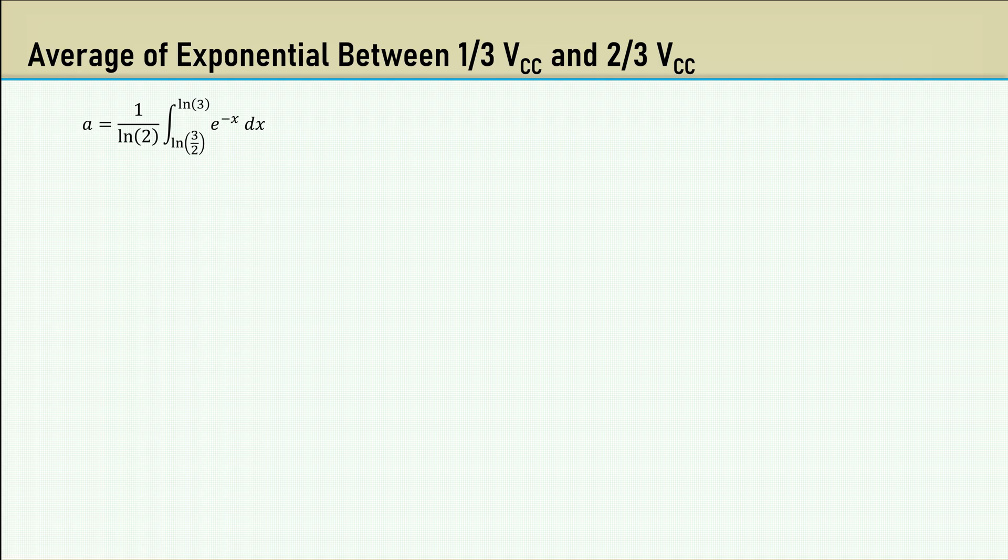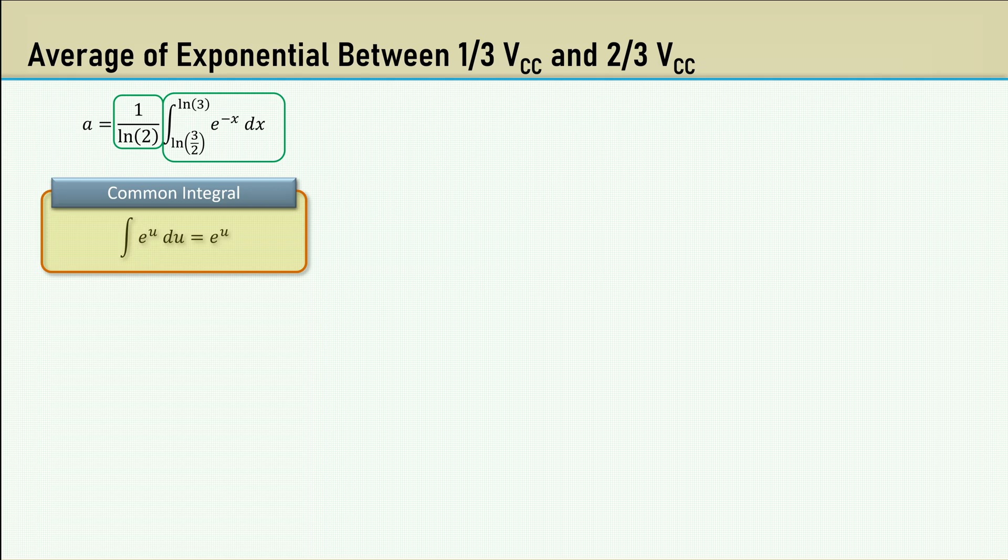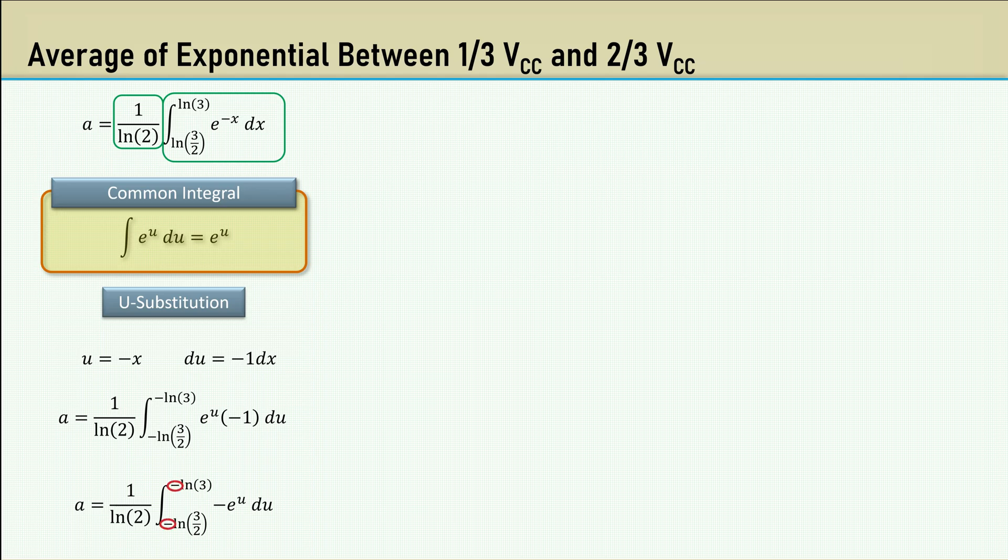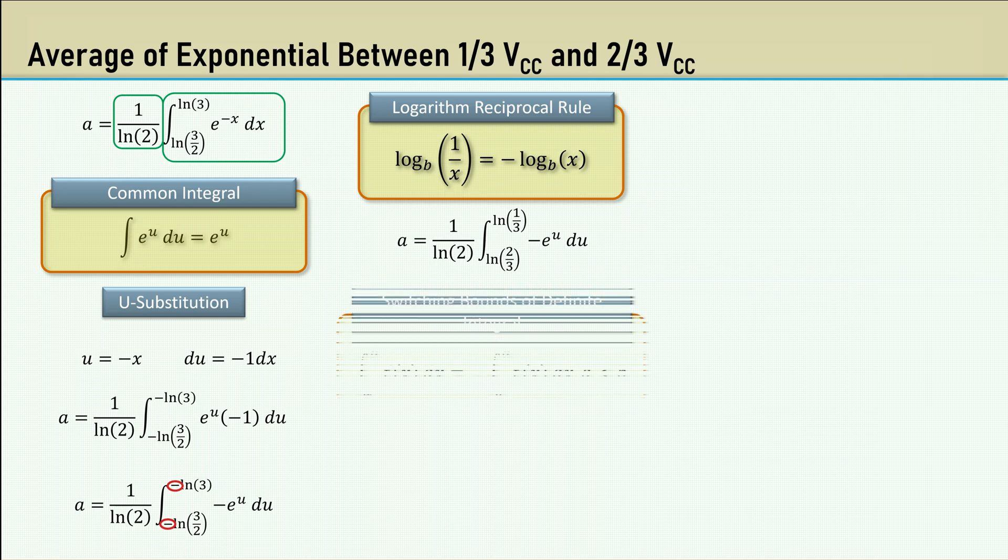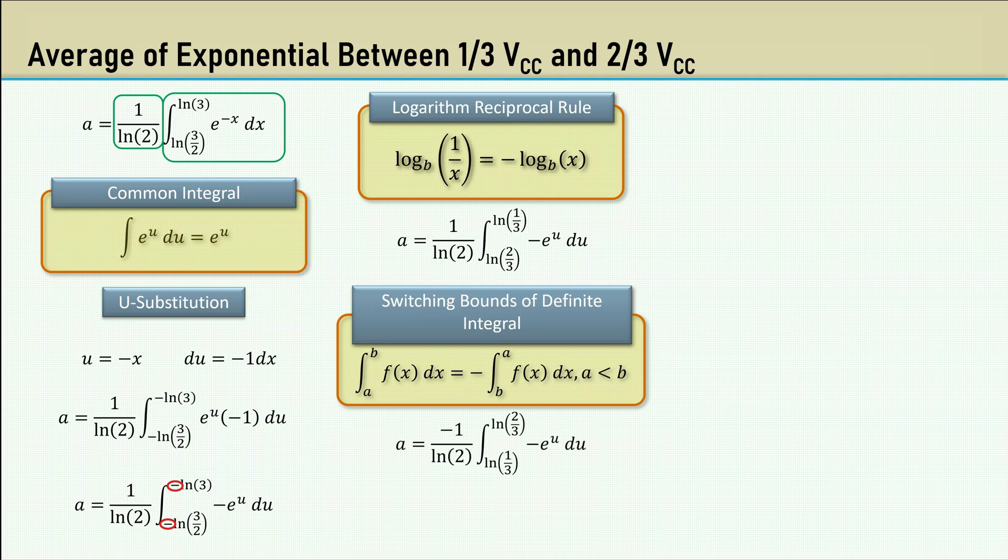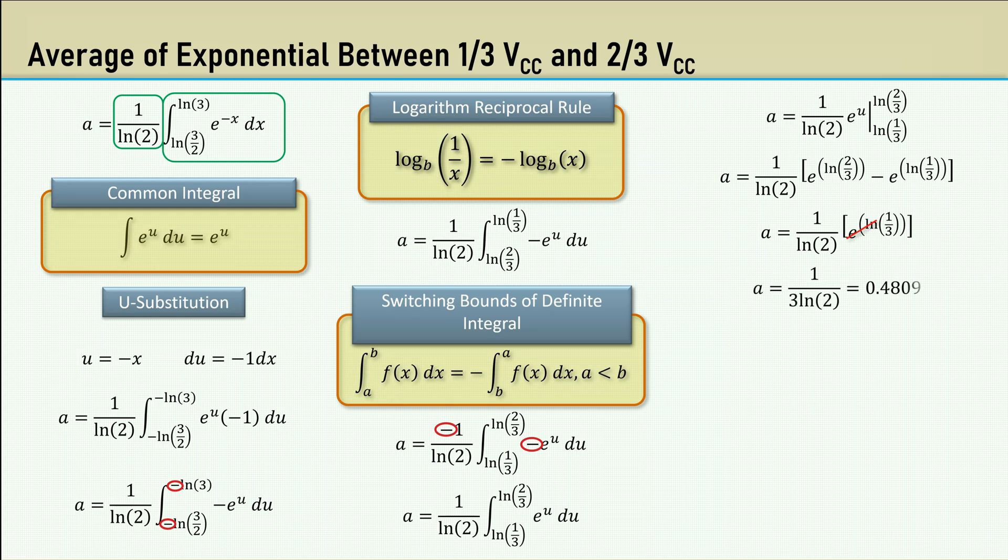Let's have some fun with calculus to derive an equation for the average voltage between the natural log of 3 halves and the natural log of 3 of e to the minus X. We will integrate between these two bounds. Then to get the average, we can divide the amount of X that is integrated with, which is the natural log of 2. Using the simplest common integral, e to the u du is e to the u. Since our X is minus 1, we must do a u substitution for u is minus X and therefore du is minus 1 dx. Applying that to the integral, now we have these pesky negative signs on the boundaries. Using the logarithm reciprocal rule once again fixes that, but we have another problem. The upper bound is less than our lower bound. We can use the rule for switching bounds of a definite integral, which simply puts a minus sign in front of the integral. That's cool because the minus signs within and in front of the integral cancel.